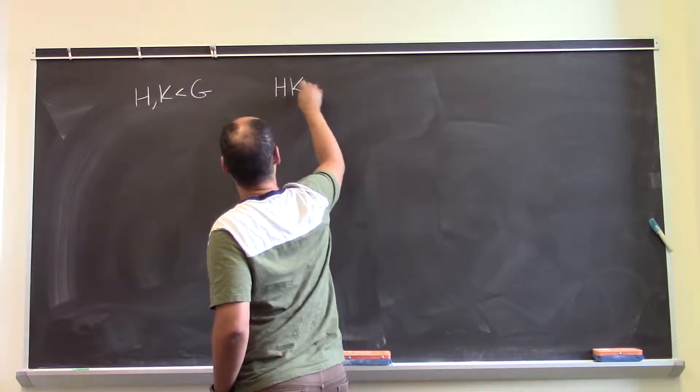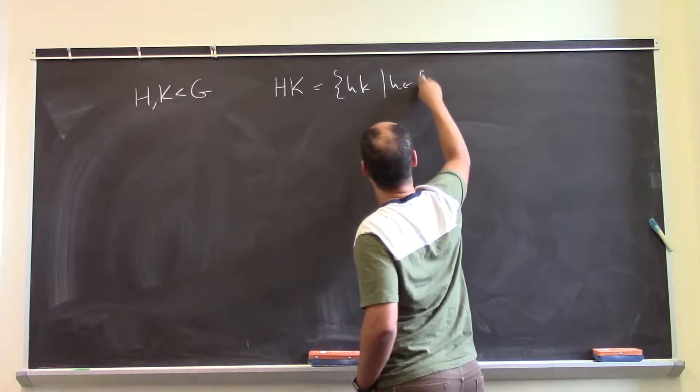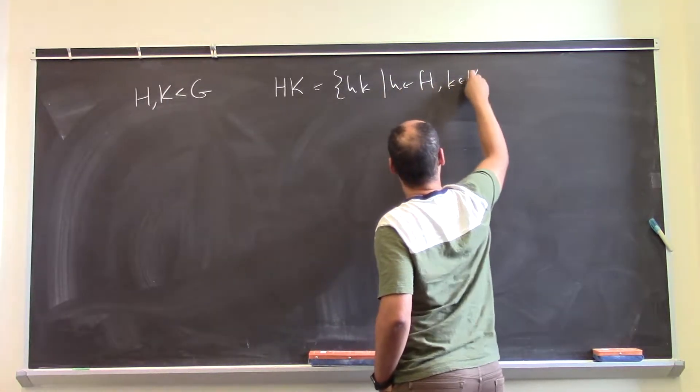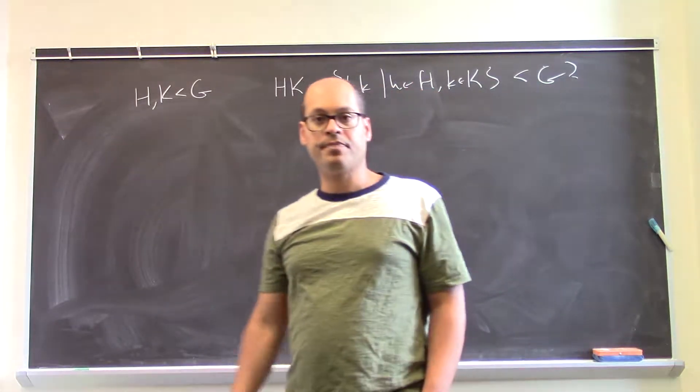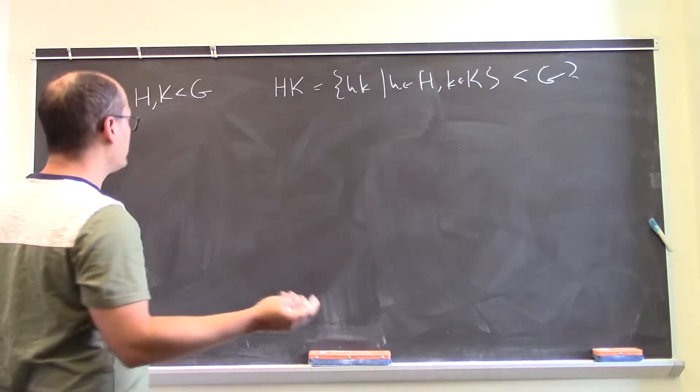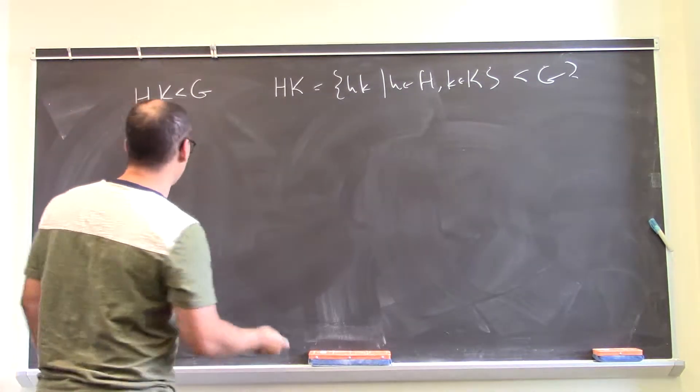A natural question might be, if you look at all the products of the form HK, then when is this itself a subgroup of G? So to answer that question, let's use a little bit of standard notation.